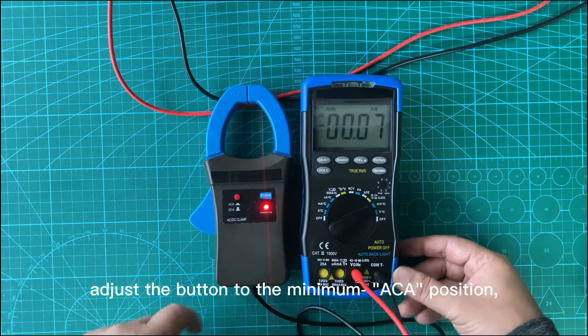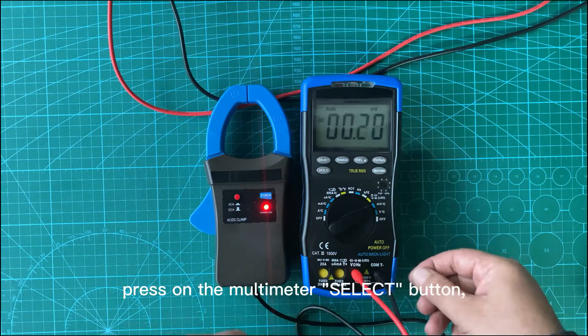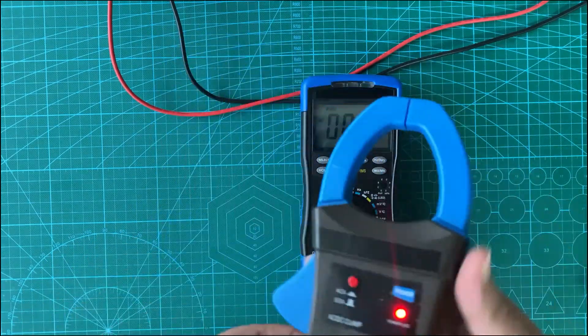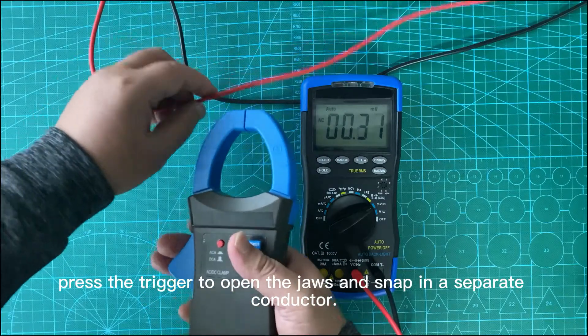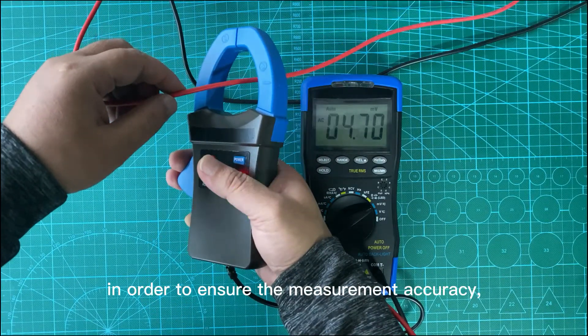Adjust the button to the minimum ACA position. Press the multimeter select button, select AC file, and start measurement. Press the trigger to open the jaws and snap in a separate conductor.